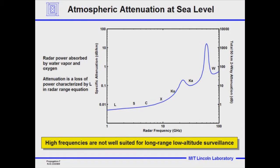Here I've plotted the attenuation in dBs per kilometer on a log scale. I want you to note that a factor of 10 dB is an order of magnitude, and that's the attenuation for each kilometer of path length. So if the attenuation were 10 dB per kilometer and the radar had a range of 10 kilometers, that means there would be 100 dB of attenuation — a huge attenuation. At 1 dB per kilometer over 10 kilometers, the signal would drop an entire order of magnitude. This is about six and a half miles.